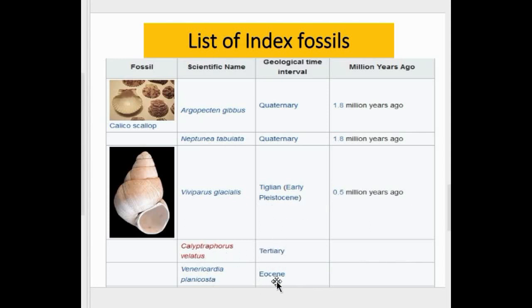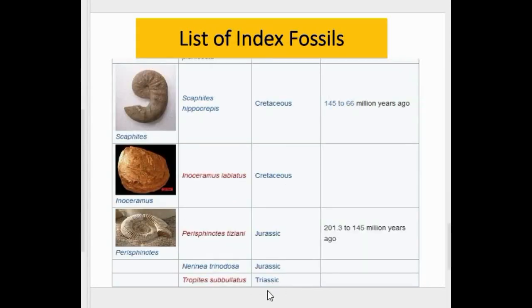This fossil is in the Tertiary, and this one is in the Eocene. Some other index fossils: this fossil is found in the Cretaceous, this is in Cretaceous, this is Jurassic, Jurassic, and Triassic. So these are the index fossils.